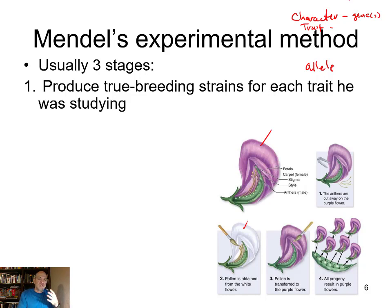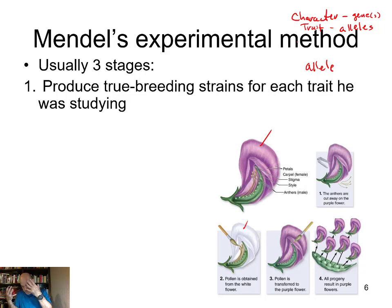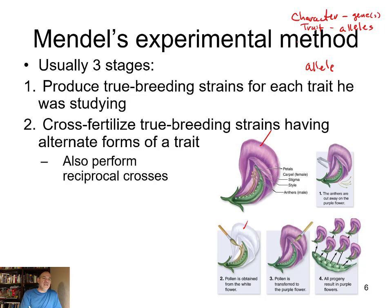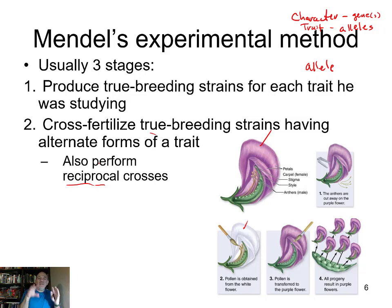Terminology: a character is what you're looking at — determined by genes — such as flower color. A trait is the specific expression of that gene, like purple or white. Different versions of a gene are called alleles, which arise because of mutations. Second, Mendel cross-fertilized the true-breeding strains and performed reciprocal crosses. A reciprocal cross means: in one experiment, take pollen from the purple flower to pollinate the white flower; in the reciprocal, take pollen from the white flower to pollinate the purple.